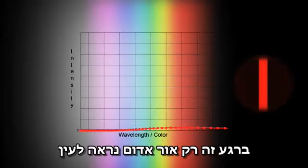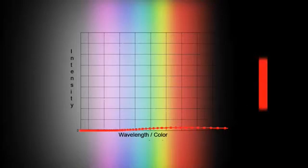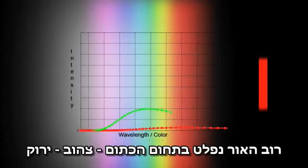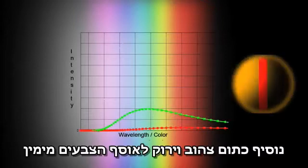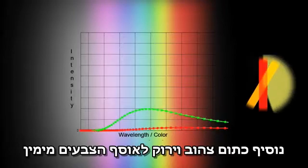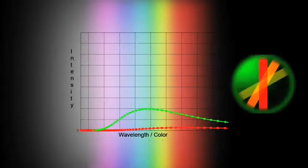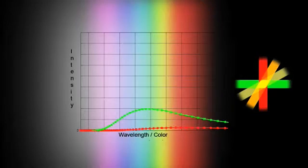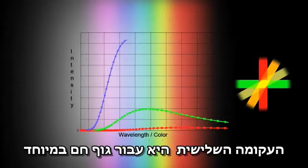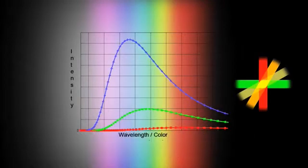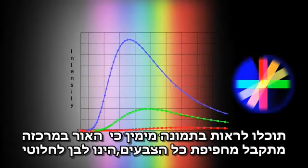Right now, only red light is visible. This curve shows how much light of each color is emitted by a medium temperature object, and the most light is emitted in the orange, yellow, and green wavelengths. So now we add orange, yellow, and green to our cauldron of light on the right. As you can see, the combination so far looks yellow. This third curve is for a really hot object — lots of light, with most of it being emitted toward the blue end of the spectrum. And as you can see, our cauldron is now pure white in the center where all the colors overlap.